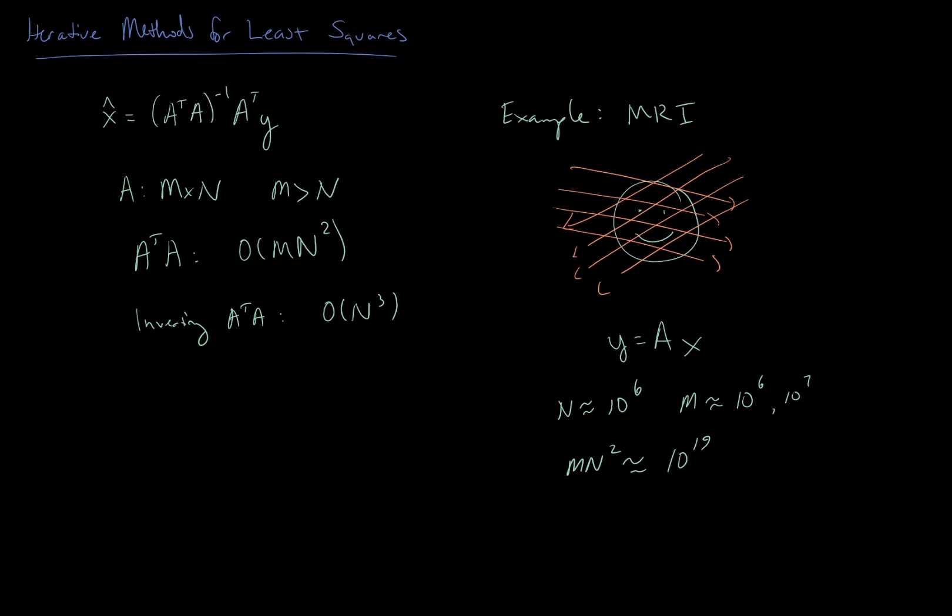With those kinds of values, even just storing A transpose A in memory is going to take terabytes of RAM. Moreover, inverting it is going to be borderline impossible. So what we'll talk about today are some iterative algorithms that allow us to not have to worry about directly computing this inverse. These can be very powerful when coupled with the fact that in many real-world systems, applying A can actually be much cheaper than the cost of an arbitrary matrix-vector multiplication. In the MRI example, the A matrix that models the MRI machine actually has a lot of structure — it's based on the Fourier transform — so we can apply A in under a second, and an iterative algorithm that just needs to iteratively apply A can solve this problem in under a minute.